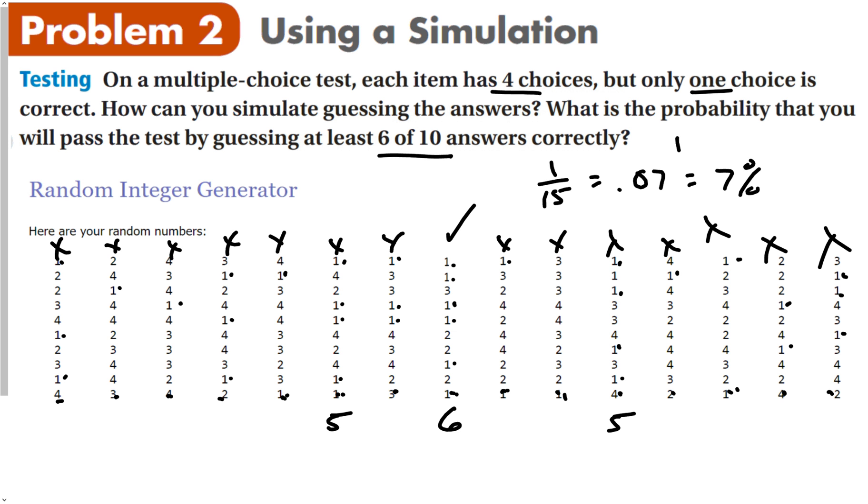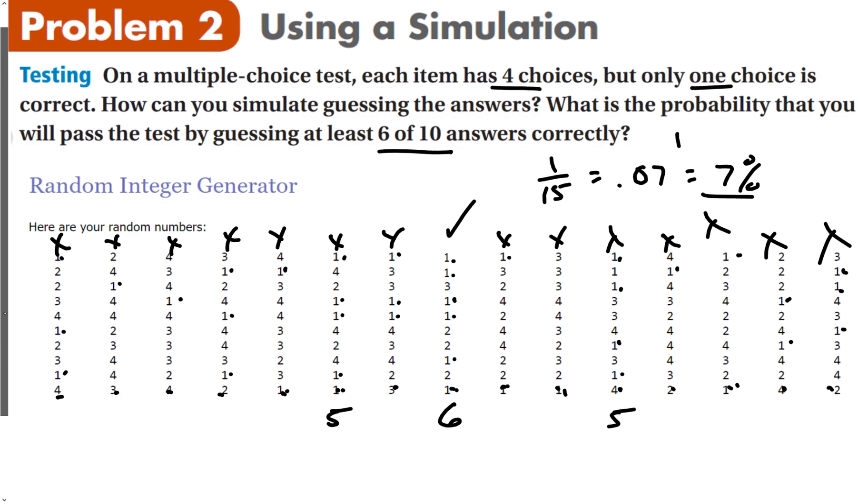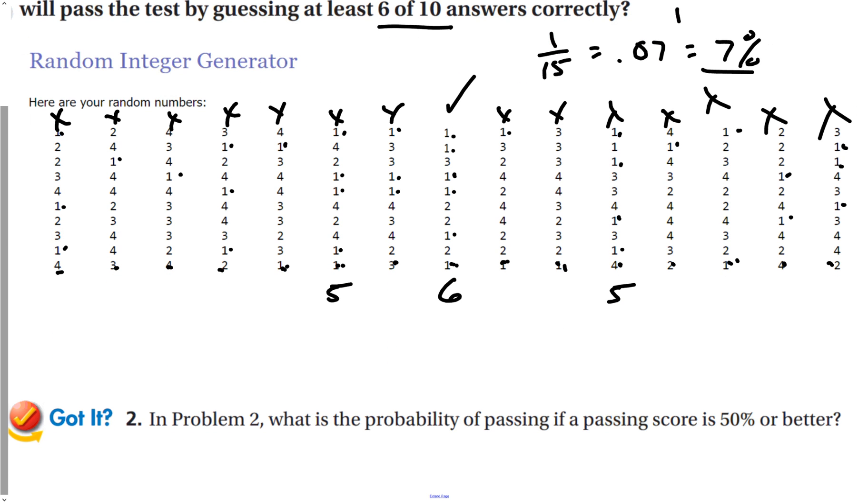So if you just guess, and my random number generator did that, you're only going to pass 7% of the time. And my got it problem is what's the probability of passing a test if the score is 50% or better? So that means you only need five correct answers. Five ones. So now the probability is going to be 3 out of 15 because we have 5, 6, and 5. So 3 out of 15 is 0.2, which is 20%. So a little bit better.